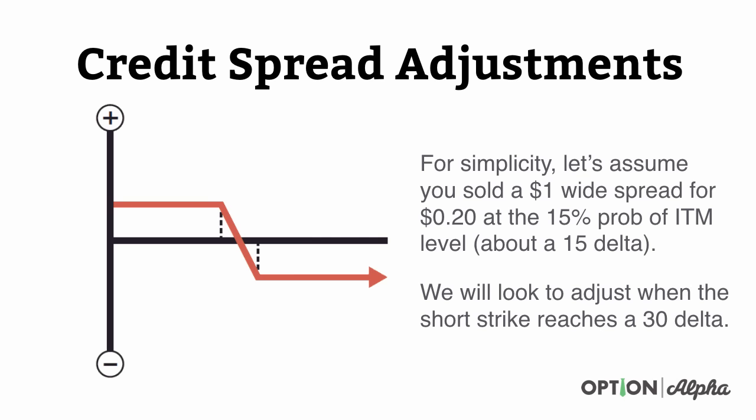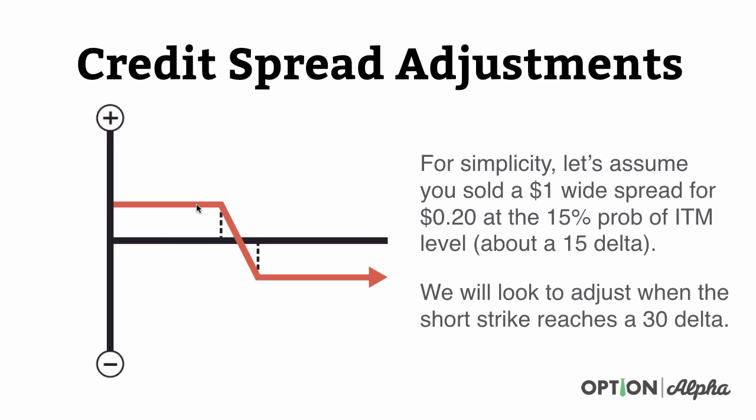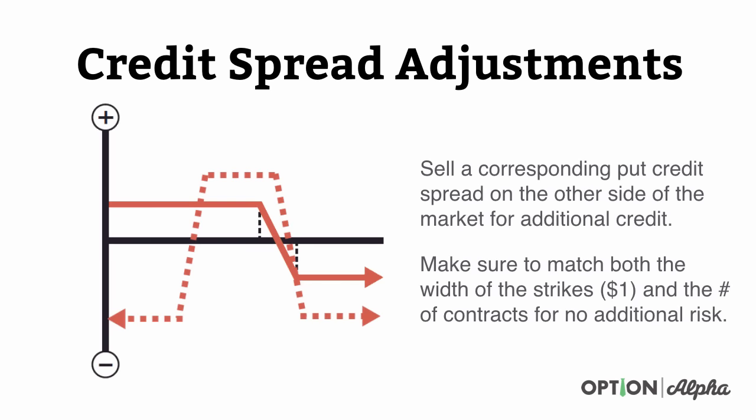What we would do is look to adjust this trade when the short strike reaches a 30 delta. If the stock starts at $50, once our short strike on the call side reaches a 30 delta, we'd look to adjust the trade. That will factor in different time and volatility indicators — the stock may be rallying up a couple dollars or implied volatility may be rising. We've got video tutorials on adjustment triggers, so go ahead and look at that. What you would do if the stock rallied towards your call spread is you would sell a corresponding put spread on the other side of the market for an additional credit.